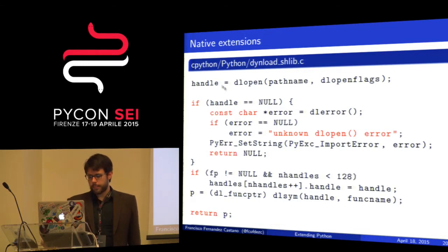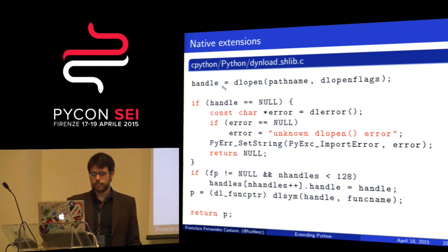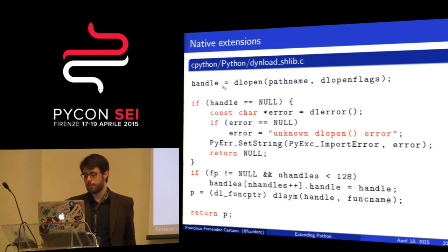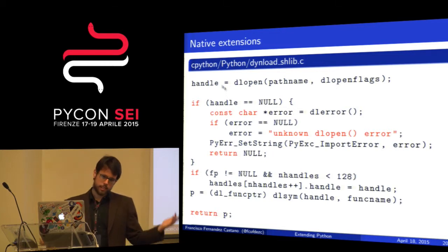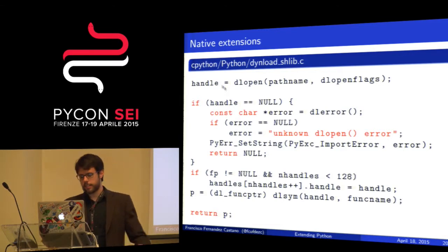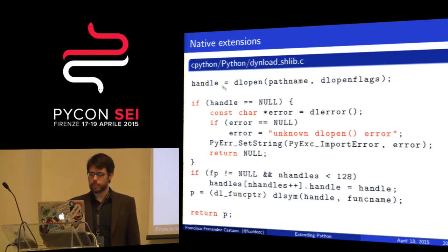Let's do another example. We'll implement the well-known Fibonacci recursive function in C, map it as Python code so we can call this C version of Fibonacci, and just as an exercise, measure the differences between a Python-implemented version and a C-wrapped version.